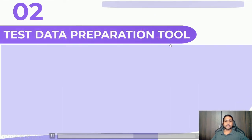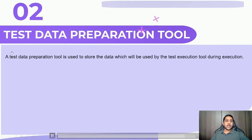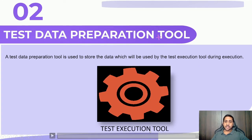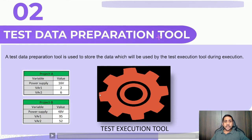Moving further — the test data preparation tool. This tool is used to store the data which will be used by the test execution tools during execution. The test execution tool uses the test data which is provided by the preparation tool. So the test execution tools run test cases sequentially, and for that we can have a test preparation tool where the data is present.